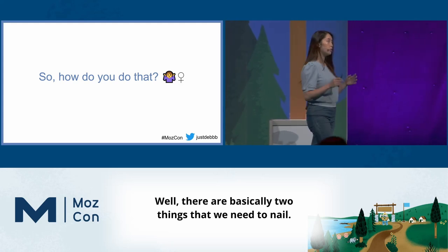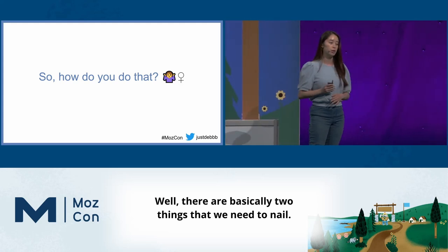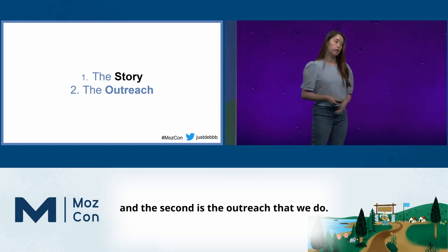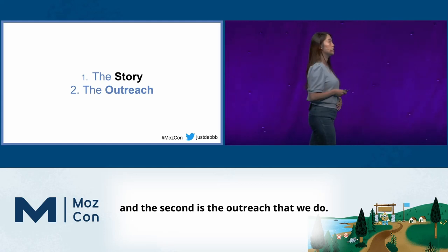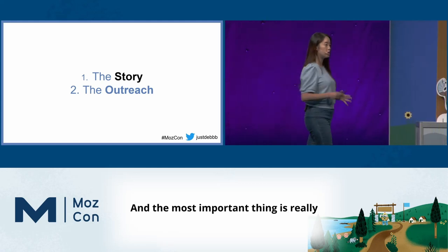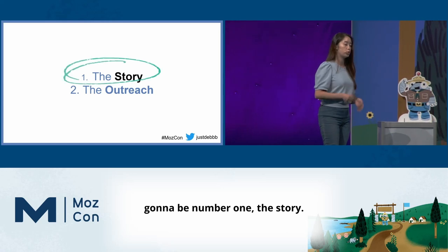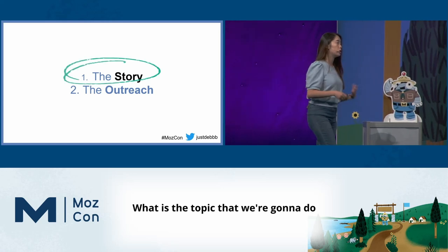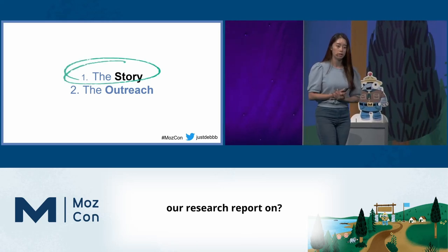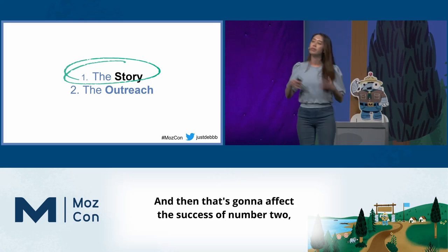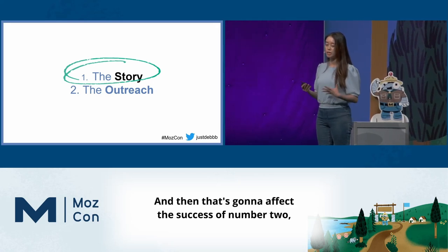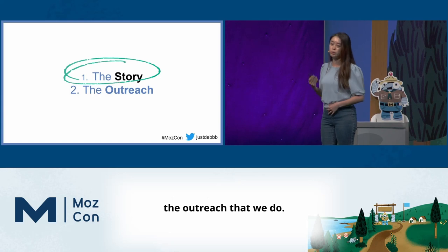Well, there are basically two things that we need to nail. The first is the story that we tell, and the second is the outreach that we do. And the most important thing is really going to be number one, the story — what is the topic that we're going to do our research report on? And then that's going to affect the success of number two, the outreach that we do.